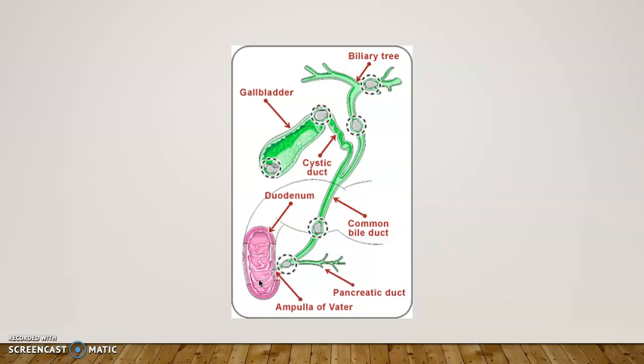Gallstones can form inside the gallbladder, right where it exits through the cystic duct, or anywhere in those ducts. The gallbladder is also known as the cholecyst, and removal of the gallbladder is called a cholecystectomy. A gallstone can also get lodged further down as it enters the small intestine, blocking not only bile flow but also pancreatic juice — this is a major cause of pancreatitis, when a stone lodges in the common bile duct.